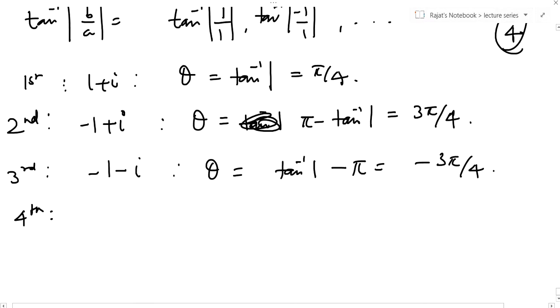If it is the fourth quadrant, then it will be 1 minus i and theta will be minus tan inverse 1, so minus π by 4. Just check, this is exactly what we got.